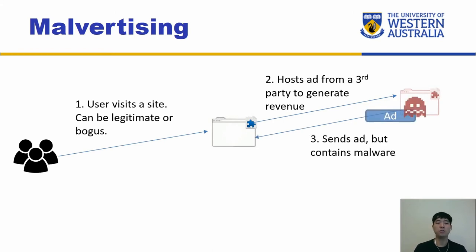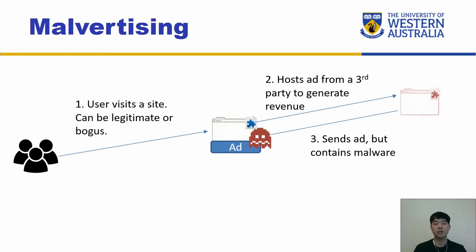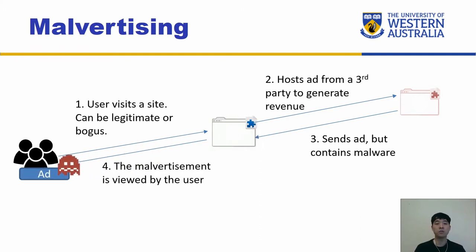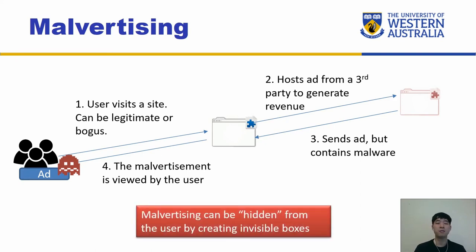The third party sends ads to display; however, these can also contain malware. Unfortunately, these third parties could themselves be victims of sharing those ads. There is some lack of traceability as to who created those ads containing malware. Eventually, these ads get displayed on sites, and as you view them they can infect your system, depending on whether they're targeting your system. The advertising can also be hidden from the user by creating invisible boxes, making visual inspection impossible.